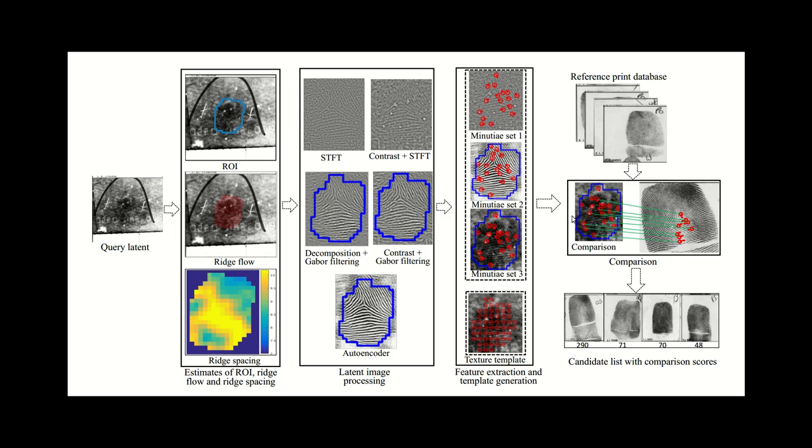Then the texture template from the latent and the texture template from the rolled print are compared, which gives another similarity score. So these four scores are fused together, and that's how all the templates end up contributing to the matching process. Each of them contributes a score.